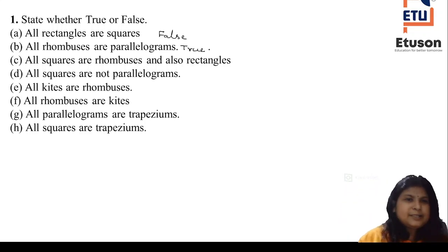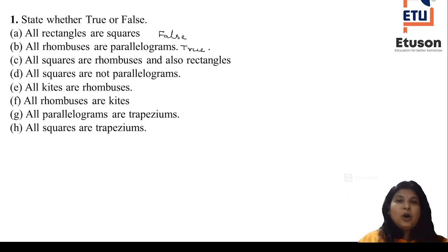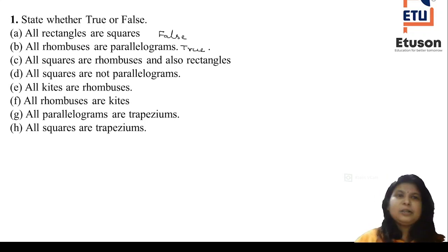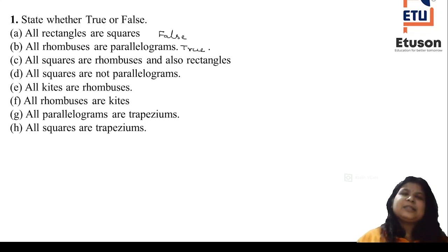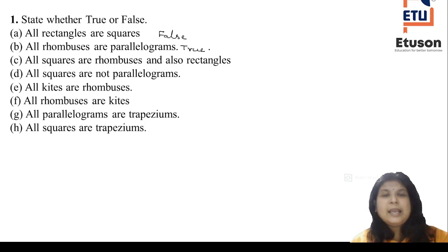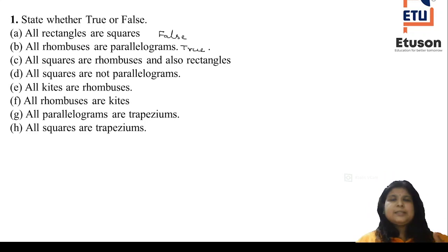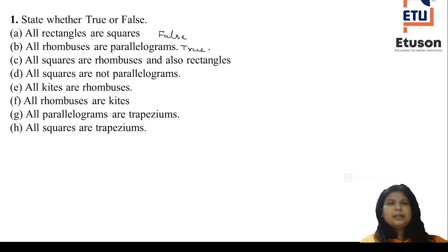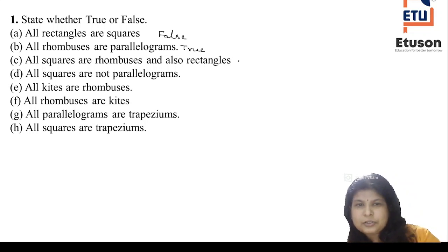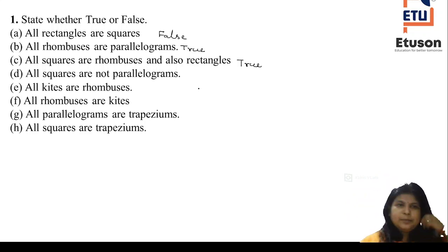Coming to Bit C: All squares are rhombuses and also rectangles. All squares are rhombuses — correct, because a rhombus whose angles are 90 degrees is a square, so definitely all squares are rhombuses. And all squares are rectangles, because a square has opposite sides equal and diagonals equal. So all squares are rhombuses and also rectangles — this statement is true.